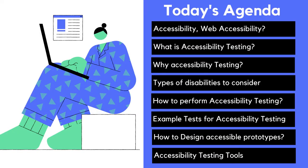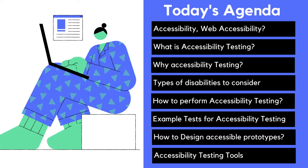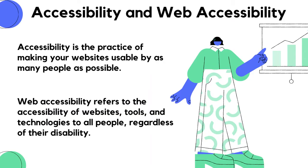Today we are going to focus on: accessibility versus web accessibility, what is accessibility testing, why we perform accessibility testing, types of disabilities we should consider, how to perform four types of accessibility testing, some example test cases, how to design accessible prototypes, and accessibility testing tools.